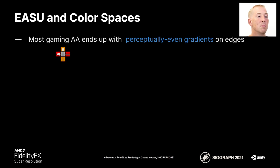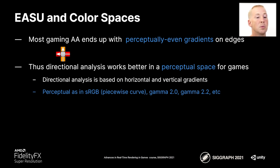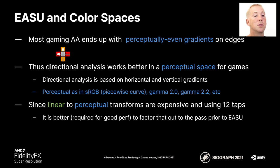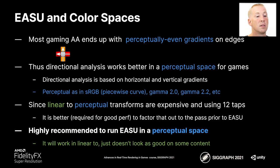Regarding EASU and color spaces: most gaming AA ends up with perceptually even gradients on edges, and therefore we want the directional analysis to be done in a perceptual color space — such as sRGB, gamma 2.0, gamma 2.2, or something similar. This avoids doing a linear-to-perceptual conversion 12 times for the 12 taps. It is much better — in fact required for good performance — to factor any linear-to-perceptual translation in the prior pass before EASU. You can still run EASU in linear; it just won't look as good on some content. The one compromise is that all filtering runs on perceptual data, but this is typically acceptable.